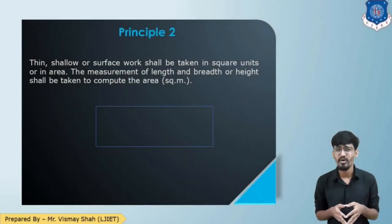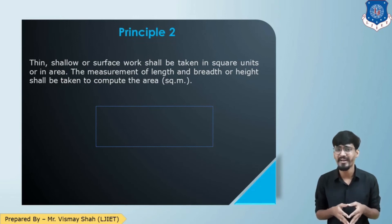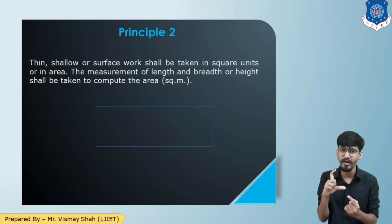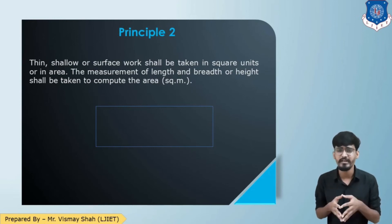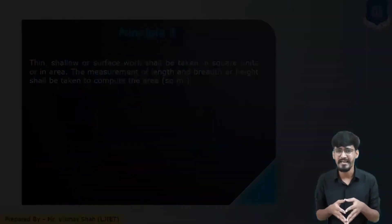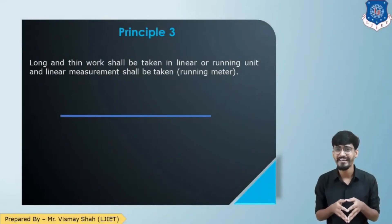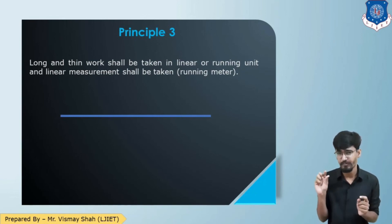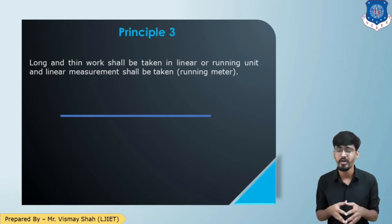Principle 2: Shallow or surface quantities shall be measured in square meters — by multiplying length and breadth, or breadth and height, or length and height. Several quantities are thin but long and broad enough, having only two dimensions, so they shall be measured in square meters. Principle 3: Long and thin quantities should be measured in linear or running meters, where only the linear dimension is taken into account — for example, a thin skirting at the base of a wall has no significant thickness, so it is measured in running meters.